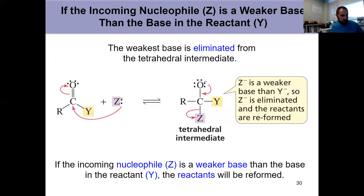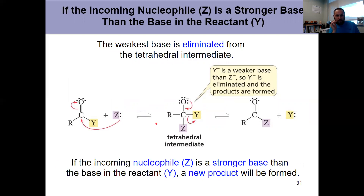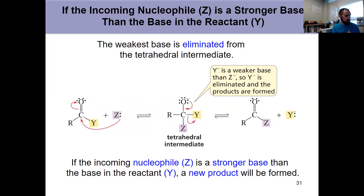This comes down to the same idea from chapters 9 and 10: the weakest base is the best leaving group. If the incoming nucleophile Z is a weaker base, it's a better leaving group — when the carbonyl reforms it just gets kicked off, going back to reactants and no new product forms. But if the incoming nucleophile is a stronger base, we get a new product, because the original group Y — the weaker base — is what leaves when the tetrahedral intermediate collapses to reform the carbonyl.